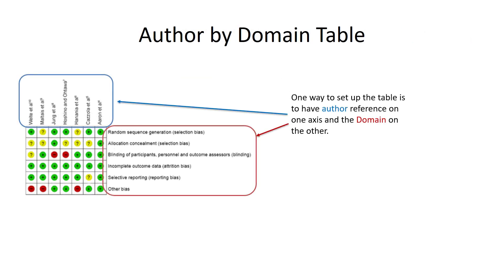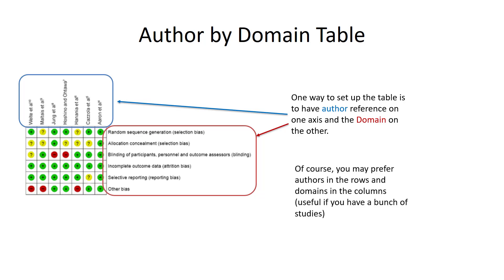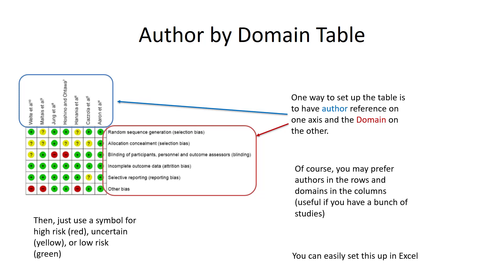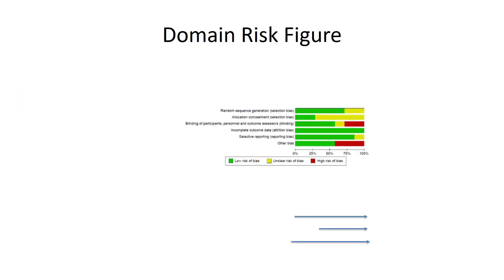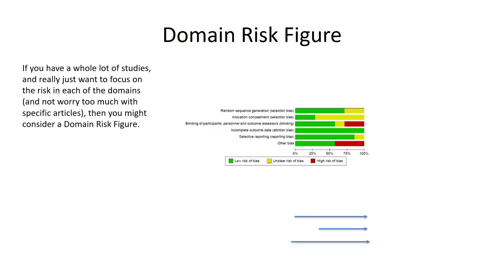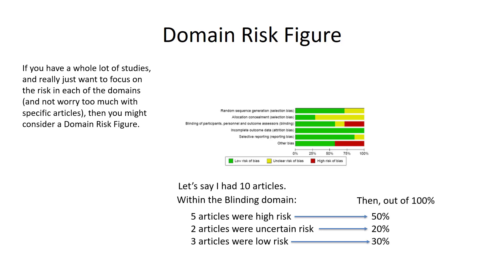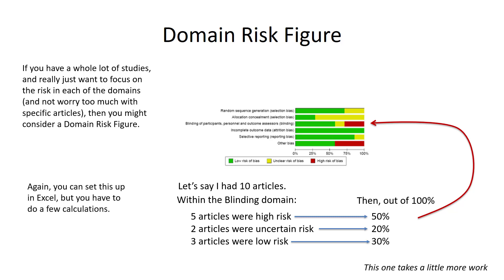The first is the author by domain table. One way to set up this table is to have the author references on one axis and the domains on the other. You can use a symbol for high risk (red), uncertain (yellow), and low (green). You can easily set this up in Excel. Then there's a domain risk figure, which is useful when you have a lot of studies and want to focus on the risk for each domain rather than each specific article. For example, if you had 10 articles within the blinding domain — five articles were high risk (50%), two were uncertain (20%) — that percentage would appear on that domain bar. This one takes a bit more work to set up in Excel.